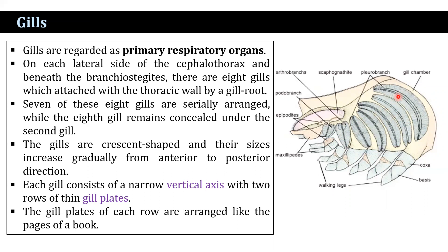Only seven gills are visible. The eighth gill is hidden by the second gill. On the lateral sides of the cephalothorax, beneath the branchostegites, there are eight gills which attach to the thoracic wall by a gill root. Seven of these gills are serially arranged, while the eighth gill remains concealed under the second gill.